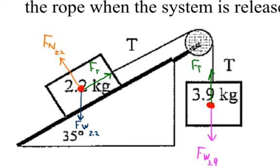There is a mistake that many beginning students make in problems like this — saying that the string tension must be equal to 39 newtons, equal to the weight of the hanging object, because the hanging object is what's pulling up on the object on the inclined plane. However, the tension is not going to be equal to that weight if the system accelerates, because the system experiences unbalanced forces. So the string tension cannot be equal to 39 newtons, or that 3.9 kilogram object is not going to accelerate.